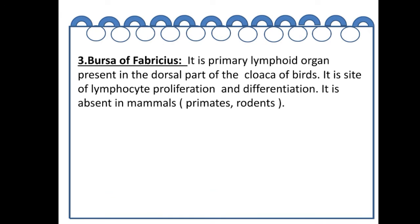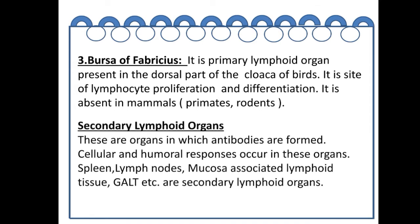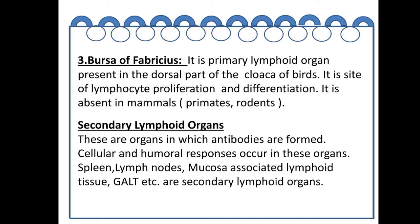There is one more organ known as the bursa of Fabricius, which is present in the dorsal part of the cloaca of birds and is absent in mammals. Moving to secondary lymphoid organs, these are the organs in which antibodies are formed, and cellular and humoral responses occur. The main secondary lymphoid organs are spleen, lymph nodes, mucosa-associated lymphoid tissue (MALT), GALT, and others.